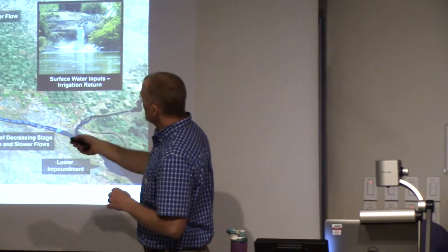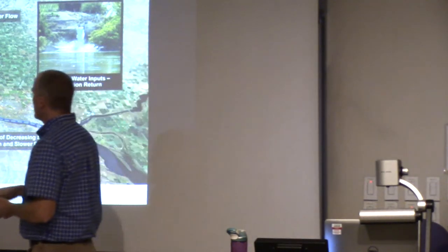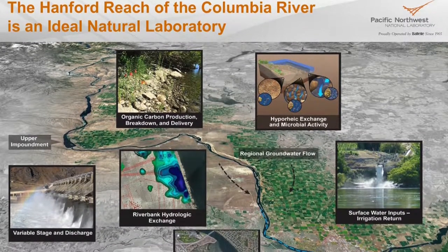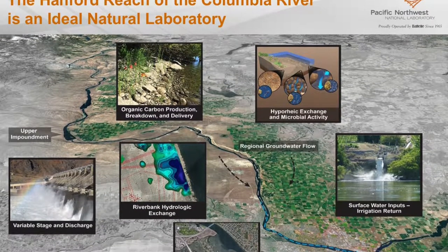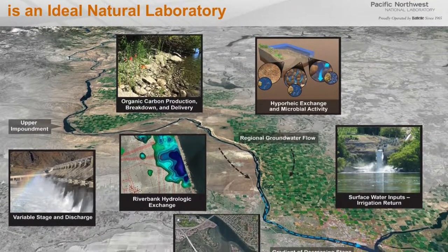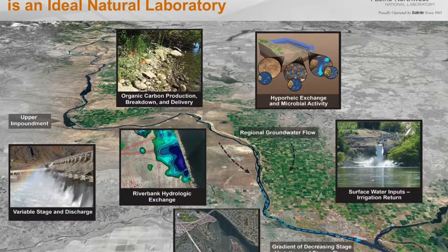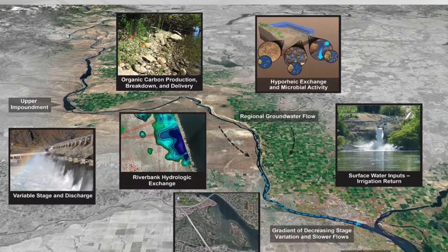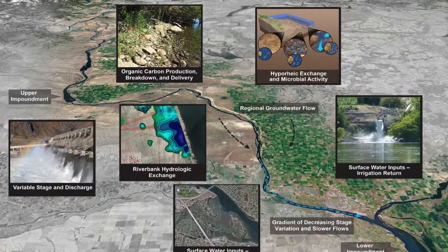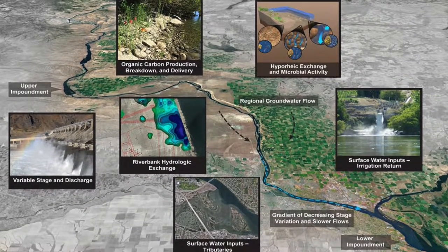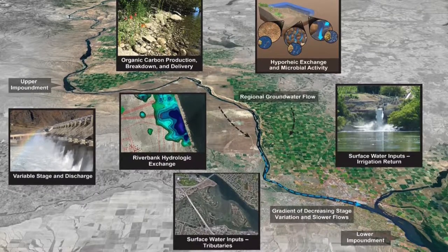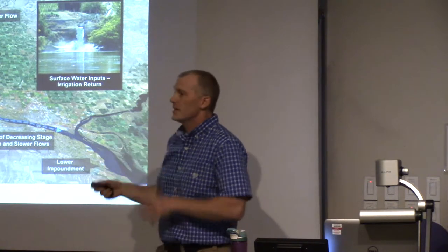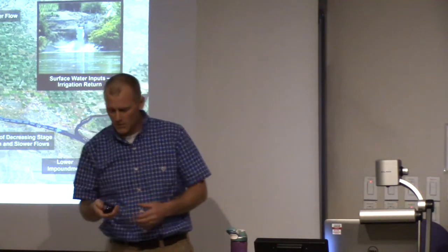We address these questions at the Hanford Reach of the Columbia River — a natural model ecosystem to interrogate. We work out fundamentals in this system, put them into models, and try to enable transferable understanding across systems. The site features a river moving downstream, an upstream impoundment dramatically influencing hydrology, dams, large exchange flows, cobble banks, and tributaries — a variety of features we can leverage for interesting fundamental work.